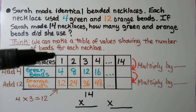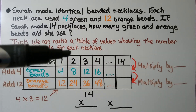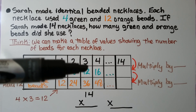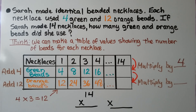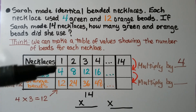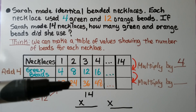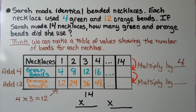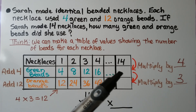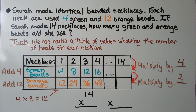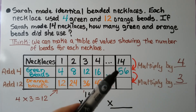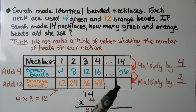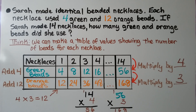We look at the values: 1 times 4 is 4, 2 times 4 is 8, 3 times 4 is 12. So the rule here is multiply by 4. From the green beads to the orange beads, we're multiplying by 3: 4 times 3 is 12, 8 times 3 is 24, 12 times 3 is 36. So this rule is multiply by 3. That means to find the green beads for 14 necklaces, we multiply 14 times 4, which is 56. And we multiply 56 times 3 to find the orange beads. 56 times 3 is 168. So she would use 56 green beads and 168 orange beads.